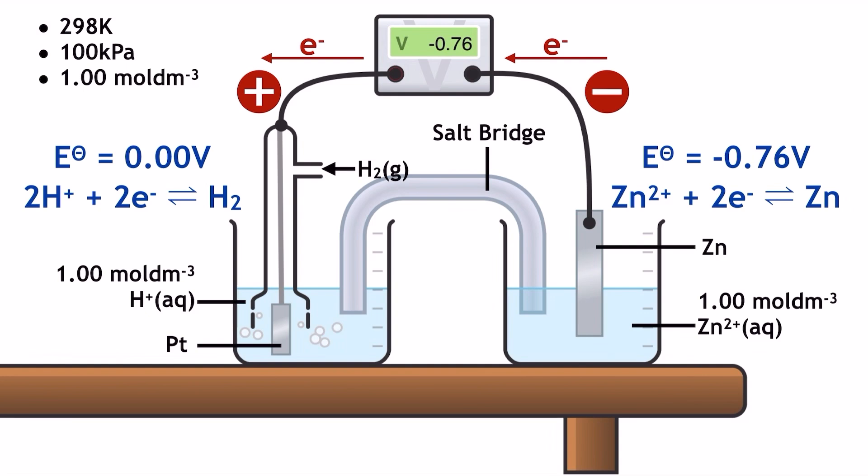If you wanted to create a functioning cell with a positive cell potential here, you would actually need to move the standard hydrogen electrode over to the right-hand side. But for recording these standard electrode potential values, we keep it on the left for consistency.